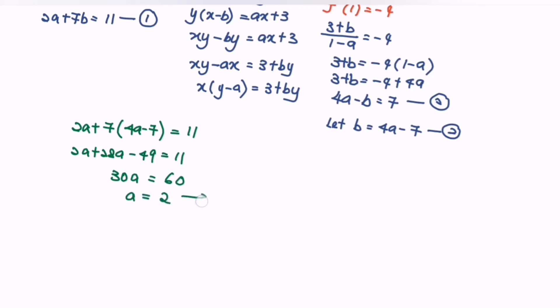Substitute a = 2 into the second equation: b = 4(2) - 7 = 8 - 7, so b = 1.